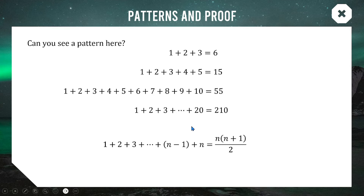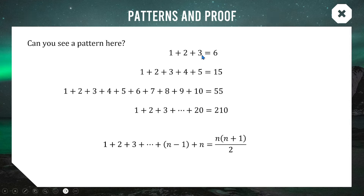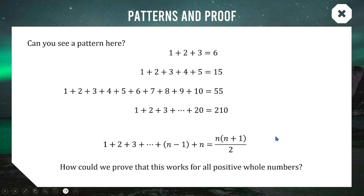My theory is that if you want to add up all the counting numbers up to n, a shortcut you can use is n multiplied by the next number (n+1), divided by 2. This is a theory I want to check whether it works for every single positive counting number. I have four examples that it works for, but I don't know for sure until I prove it. One way we can prove this is by doing induction — a three-step process.